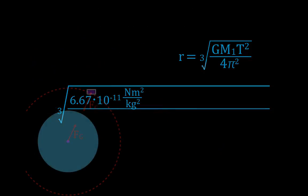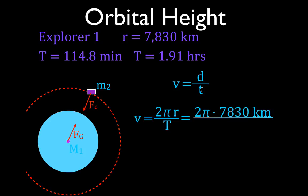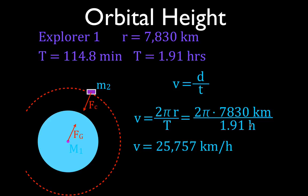Now we can also calculate the velocity, because we know the radius. The velocity is the distance 2πR divided by T. That's 2π × 7,830 km — which is the height above Earth plus the Earth's radius — divided by the period. Converting to hours gives 25,757 kilometers per hour, which you can then convert to 7.15 kilometers per second.